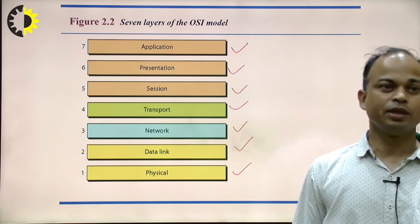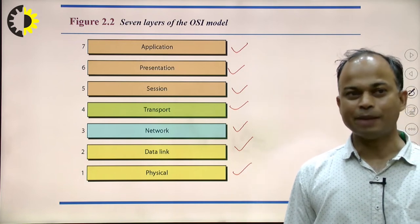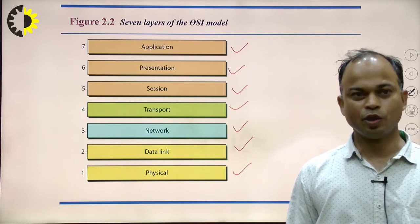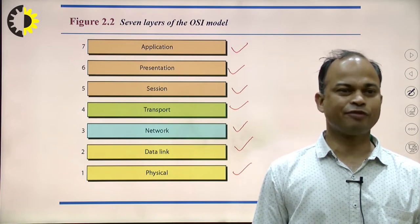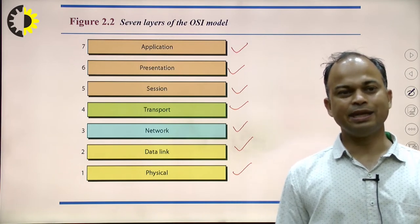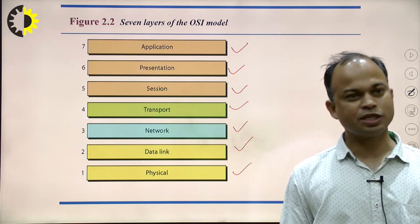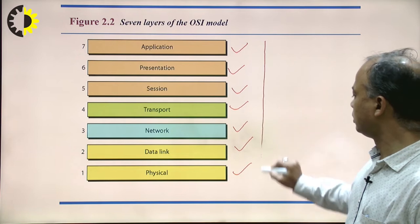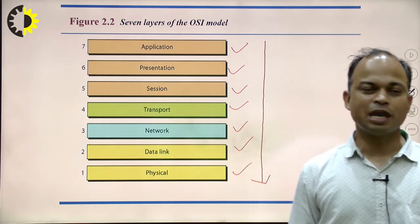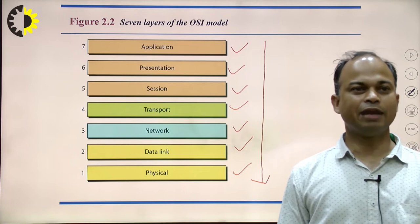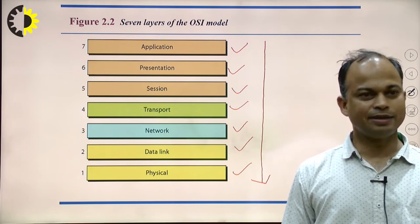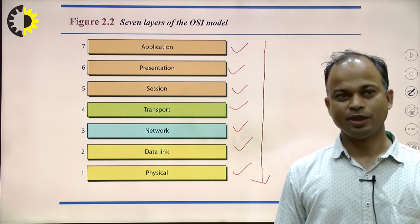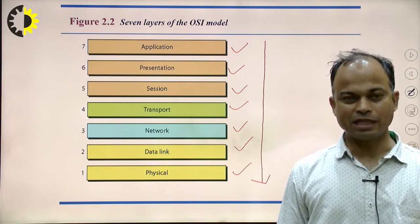The user sits at the application layer — the application layer is the most close to the user. The physical layer is close to the system. Data is forwarded from the application layer downward: application layer, then presentation layer, then session layer, then transport layer, network layer, data link layer, and physical layer. Every layer has a well-defined function.